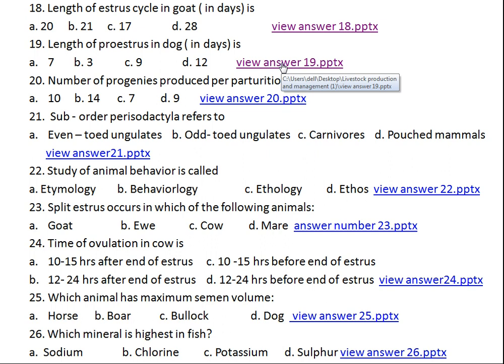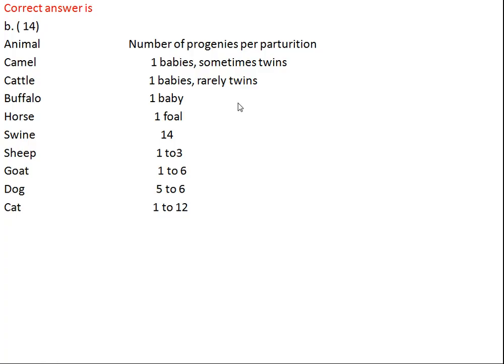Question number twenty: the number of progeny produced per parturition of sow is what? Option A: 10, Option B: 14, Option C: 7, Option D: 9. The right answer is 14. Camel, cattle, buffalo, and horse all produce 1 offspring per parturition — twins occur rarely. Swine produces 14 per parturition. Sheep: 1–3, goat: 1–6, dog: 5–6, cat: 1–2.